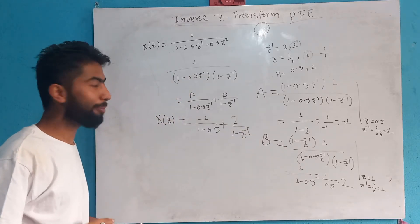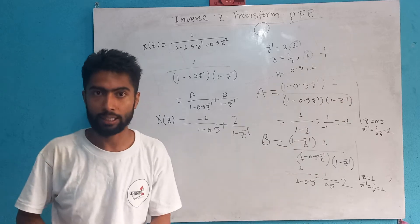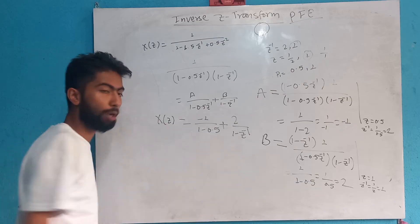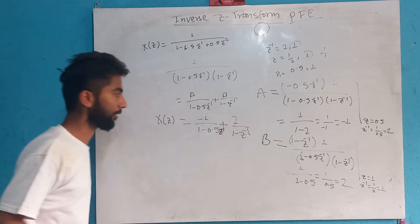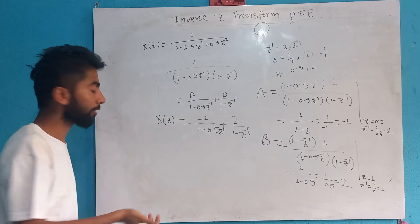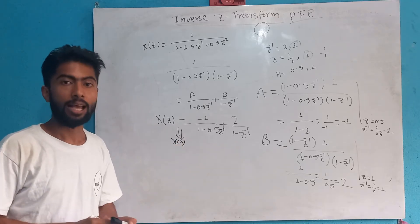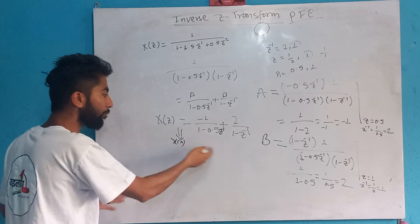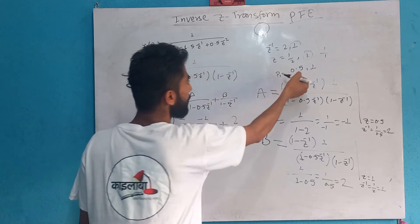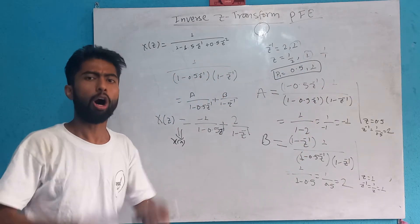Good. Now I want you to recall the elementary signals and the transform pairs we studied earlier. We need to write the inverse Z-transform from this form. From this form, we can extract the inverse Z. But first, we have to write all possible ROC.